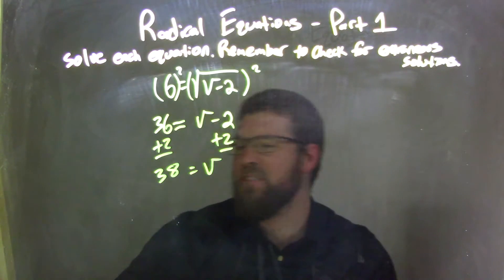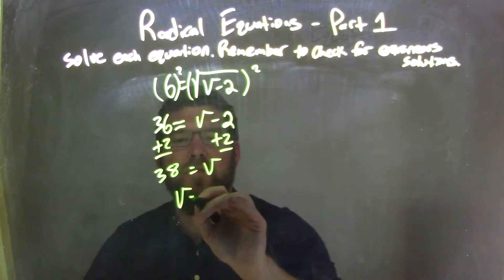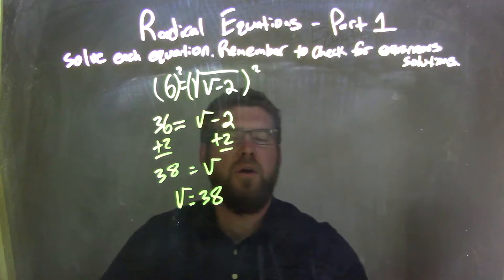Equals v. And then I can just write it nice and neat with v first, so v equals 38. But now I need to check.